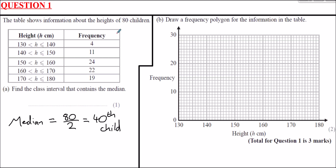What we do here is a running total — cumulative frequency — to see where we get up to at least 40. The first row from 130 to 140 gives us just the first 4 children. We keep going: 4 plus 11 is 15; 15 plus 24 takes us to 39. The 39th child is the tallest in the 150 to 160 category, but we're not quite at 40 yet. So the 40th child is the first one in the next interval. Adding 39 plus 22 gives 61, confirming the 40th falls within 160 to 170. The class interval containing the median is 160 to 170.